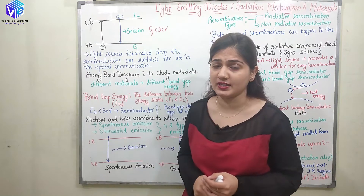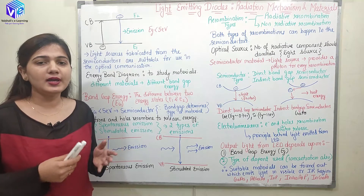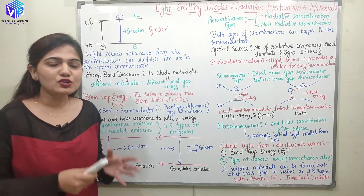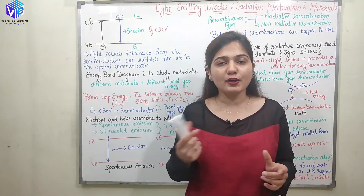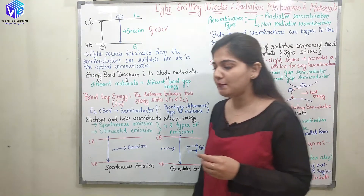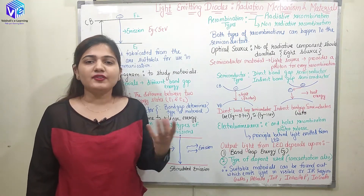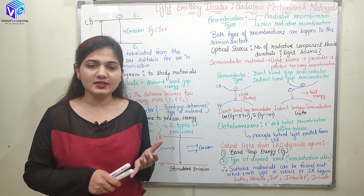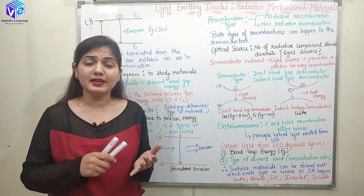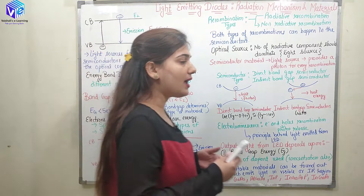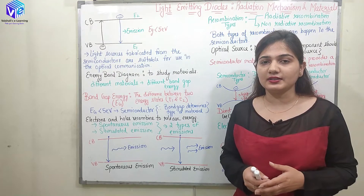Let's start our topic of the day. First we are going to talk about the radiation mechanism — how the LED is going to radiate. For that we should understand the energy band diagram. We have different types of materials: insulators, metals, conductors, and semiconductors.